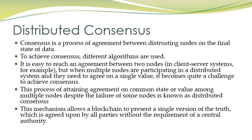It is easy to reach an agreement between two nodes in a client-server system. But in a blockchain network there are different types of nodes and many peers that do not trust each other. When multiple nodes participate in a distributed system they need to agree on a single value. If they agree, the transaction is finalized, a block is created, and the block is inserted in the blockchain. It becomes quite a challenge to achieve consensus when there are many nodes on the network.